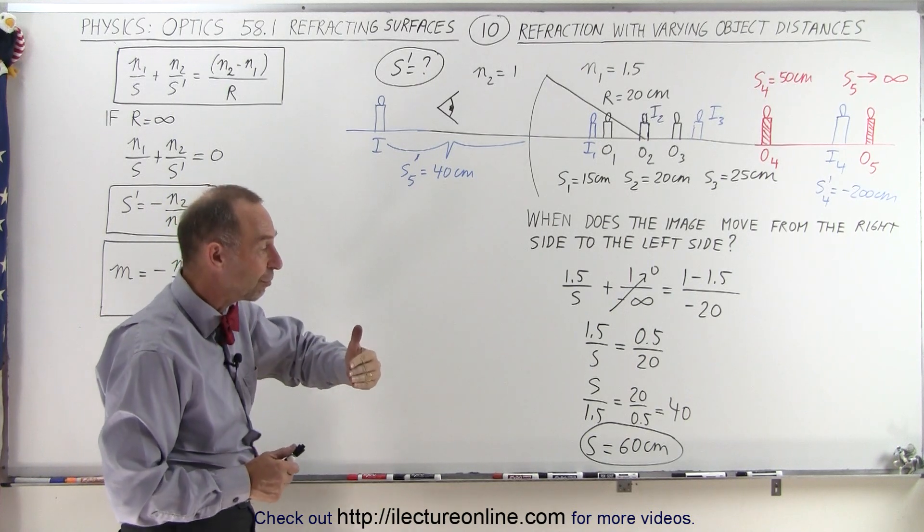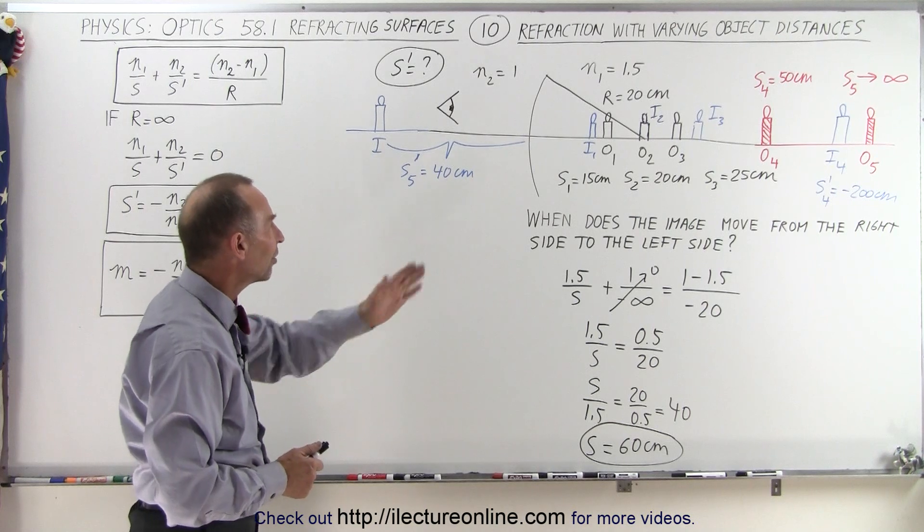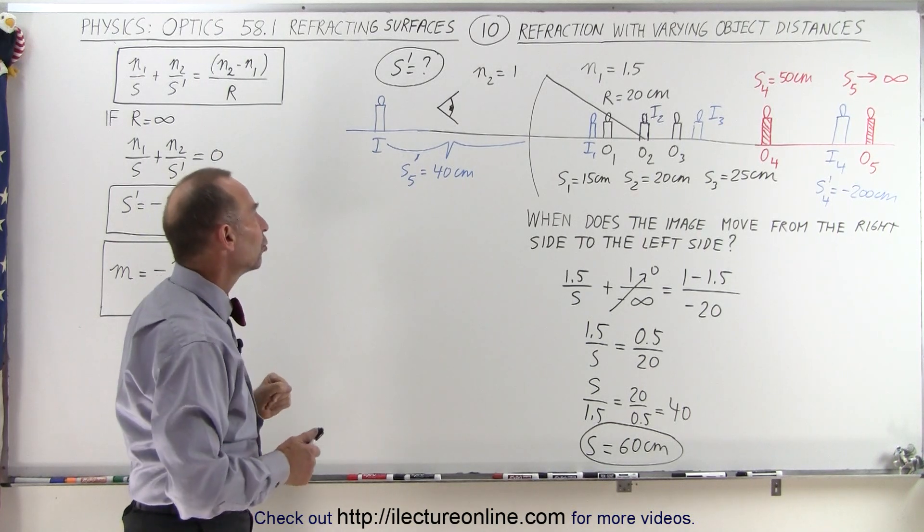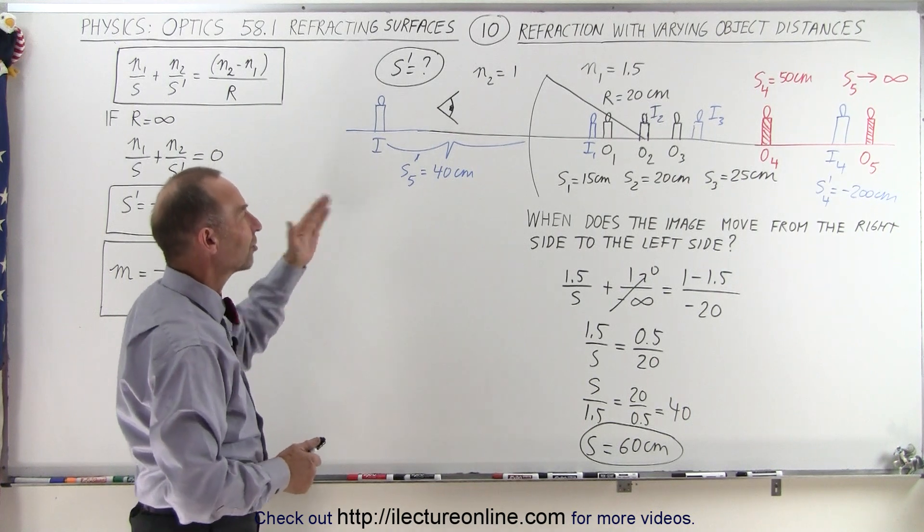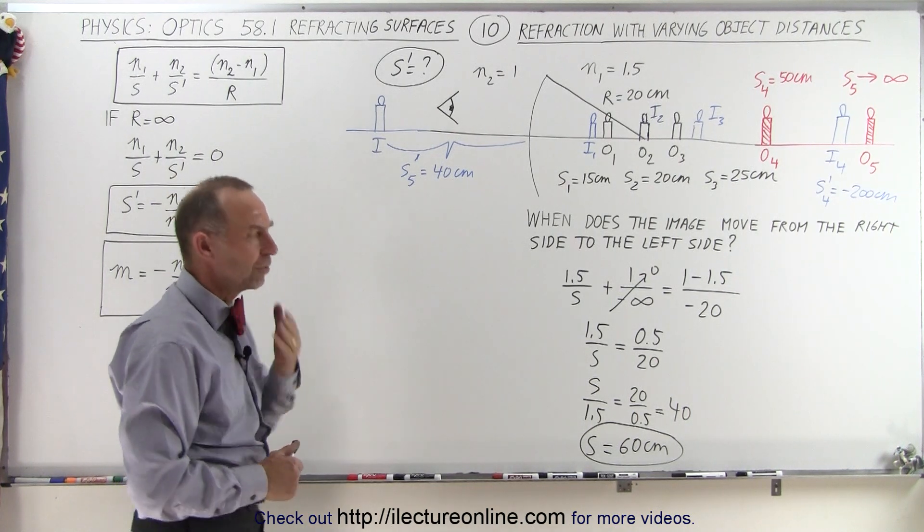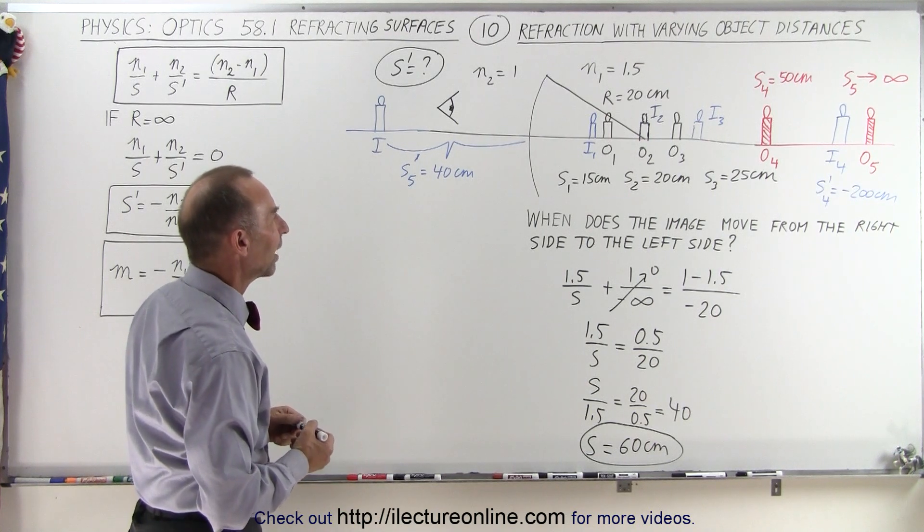If you then move the object distance further to the right, now you're going to get a positive S' distance, and now the image will move to the left side of the boundary on the other side relative to the object. So maybe we should try a quick trial for that.